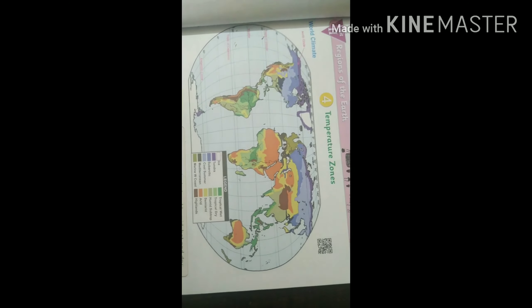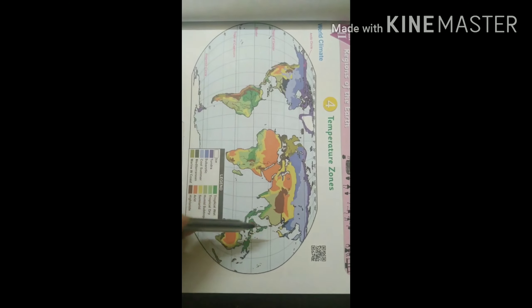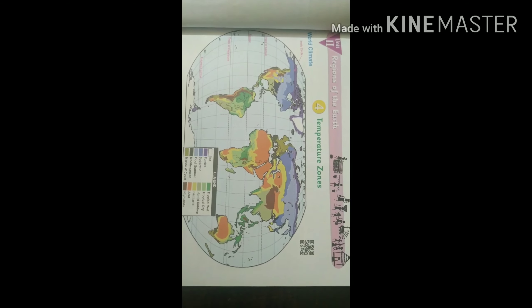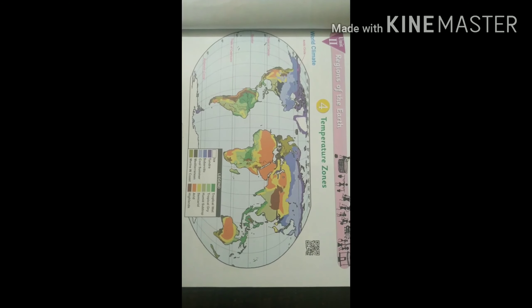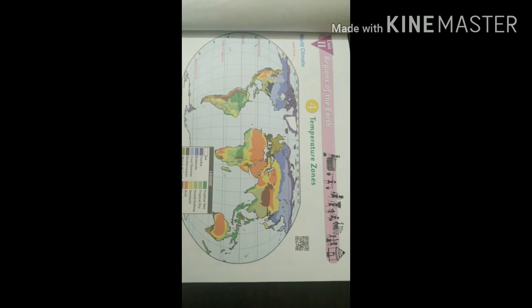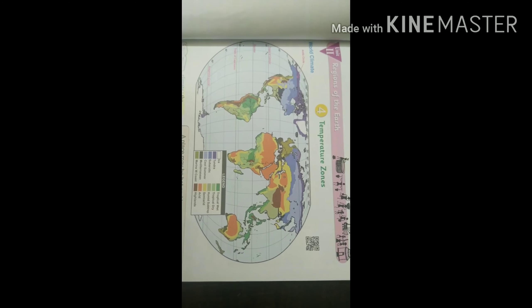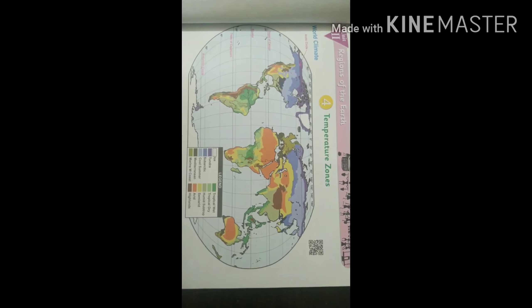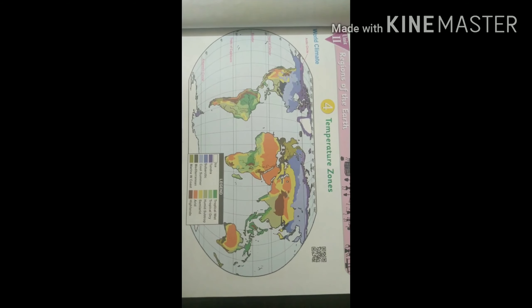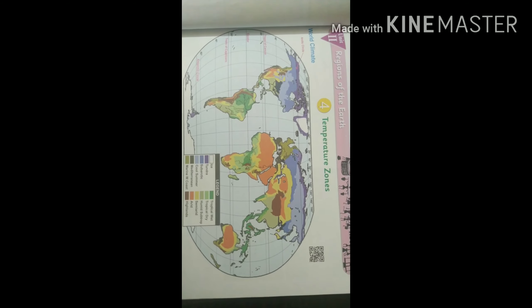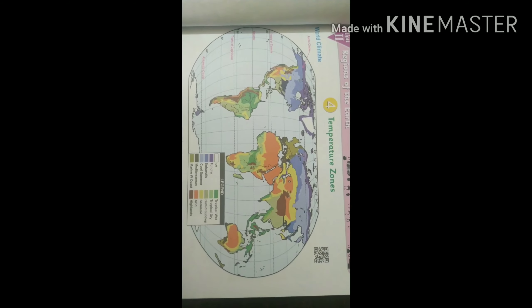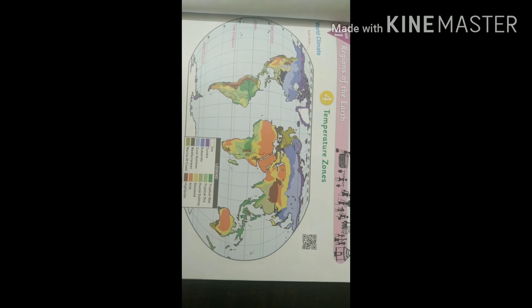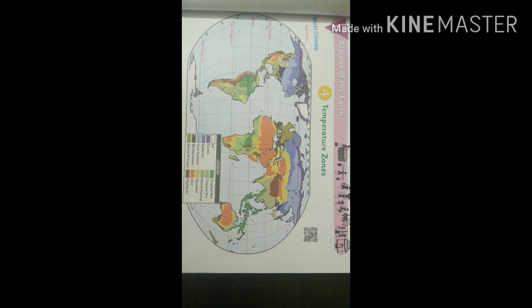You can see here the climate of the world, how it is distributed in all places. A place may be hot and humid, hot and dry, cold and wet, cold and dry. Not at a point in time but over a long period of time. The degree of sunlight and amount of rainfall received by a place determines heat conditions and humidity of a place. Climate impacts the ecosystem, natural vegetation, and the way people live.